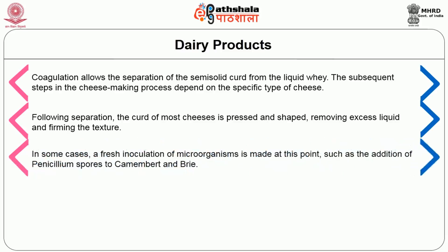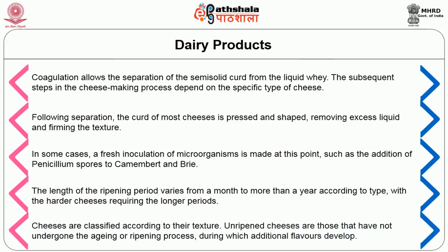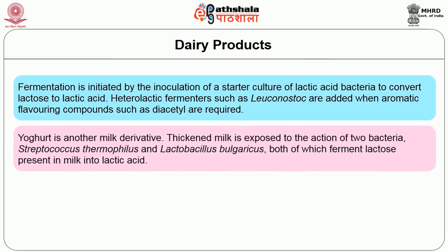In some cases a fresh inoculation of microorganisms is made at this point, such as the addition of Penicillium spores to Camembert and Brie. The length of the ripening period varies from a month to more than a year according to type, with harder cheeses requiring longer periods. Cheeses are classified according to their texture. Unripened cheeses are those that have not undergone the aging or ripening process. Fermentation is initiated by the inoculation of a starter culture of lactic acid bacteria to convert lactose to lactic acid. Heterofermenters such as Leuconostoc are added when aromatic flavoring compounds such as diacetyl are required.